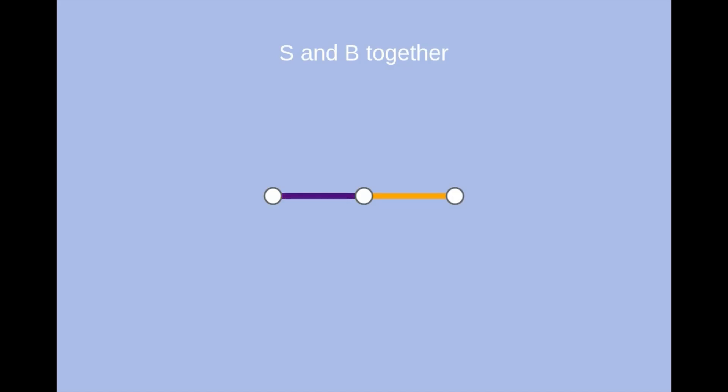There cannot be a third edge, because whatever color you choose, it will either contradict that s is a matching, or that b is a matching, by making the student be in two pairs at once.